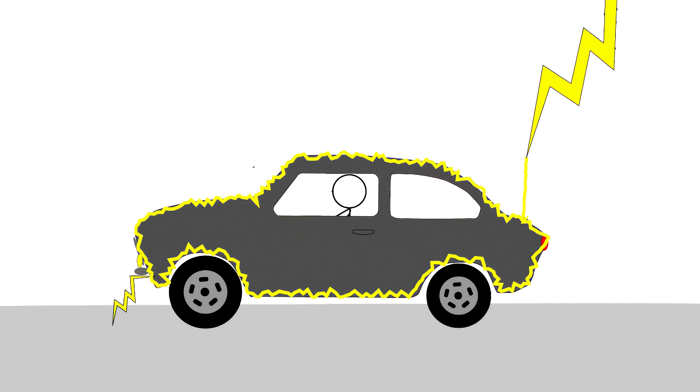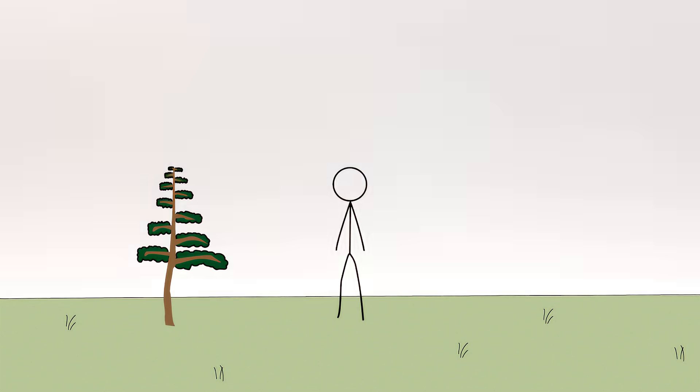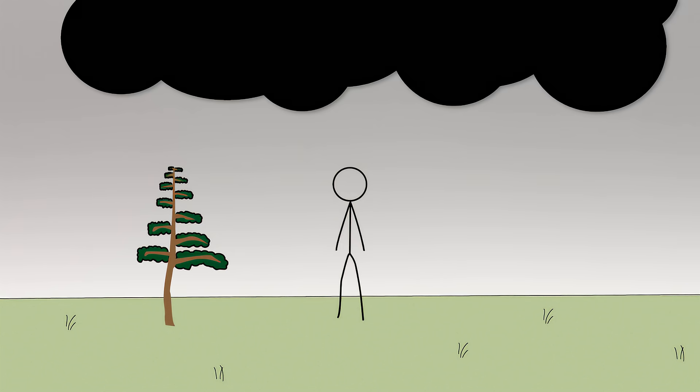It channels lightning around rather than through you. Of course, if you're away from your car and get caught in an open field during a storm, chances are slim that you'll have a medieval coat of armor or high-voltage line suit handy.